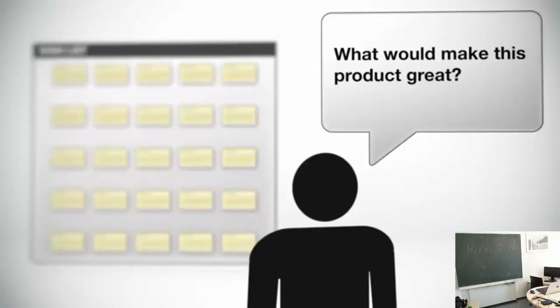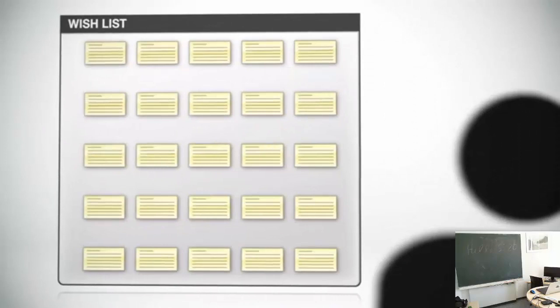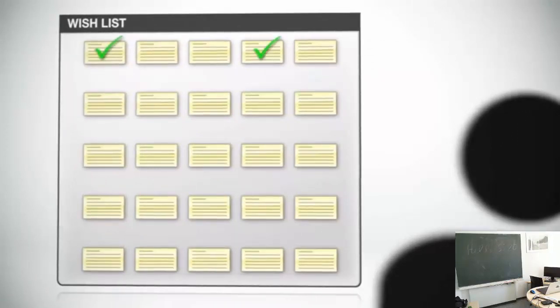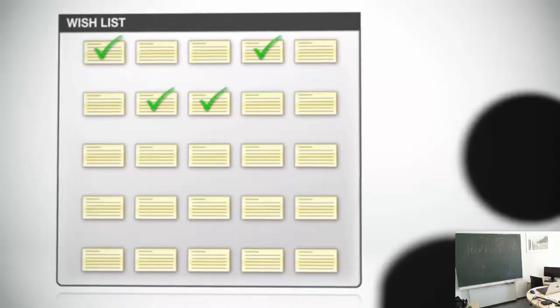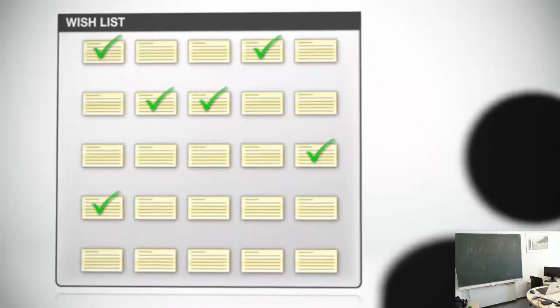Once we have our wish list, or the product backlog, we need to start planning which specific user stories we're going to be putting into a particular release of our product.